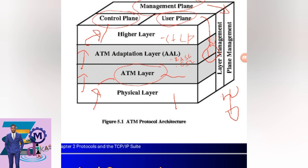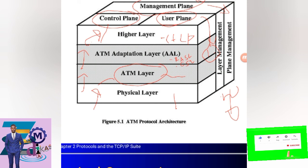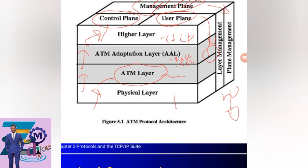The three-dimensional representation of the ATM protocol architecture consists of three planes: the management plane, the control plane, and the user plane. These three are the important dimensional components of the ATM protocol architecture.